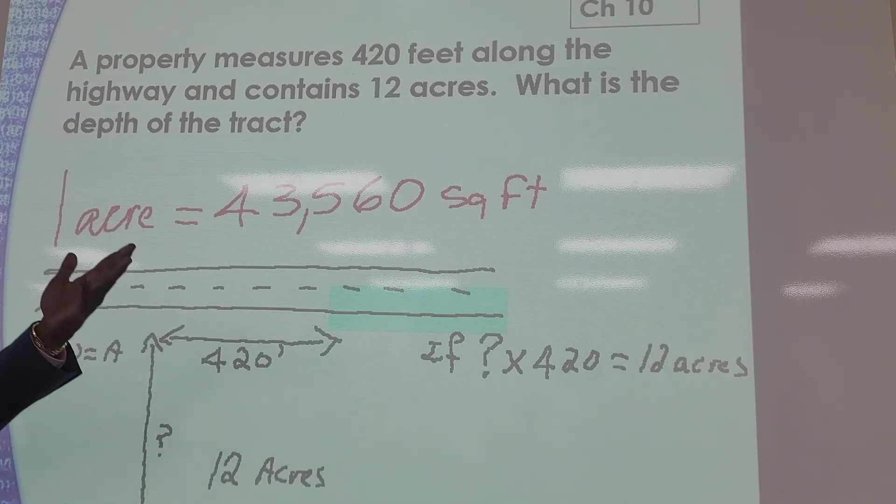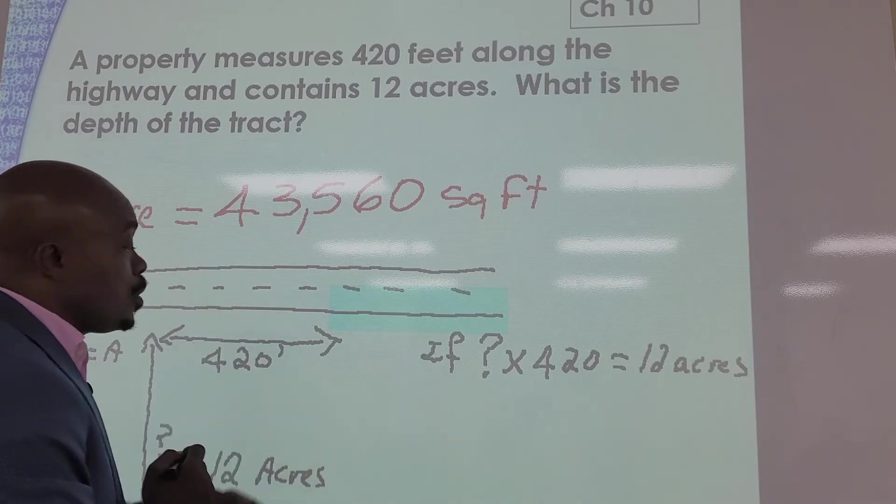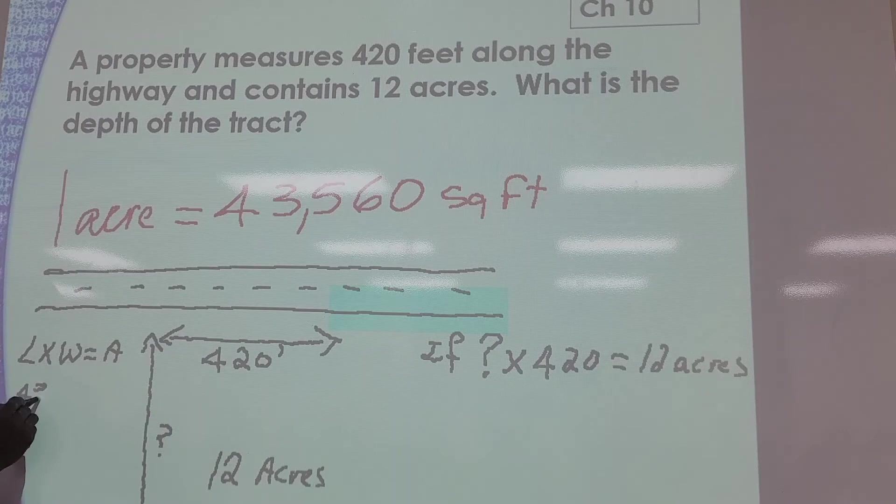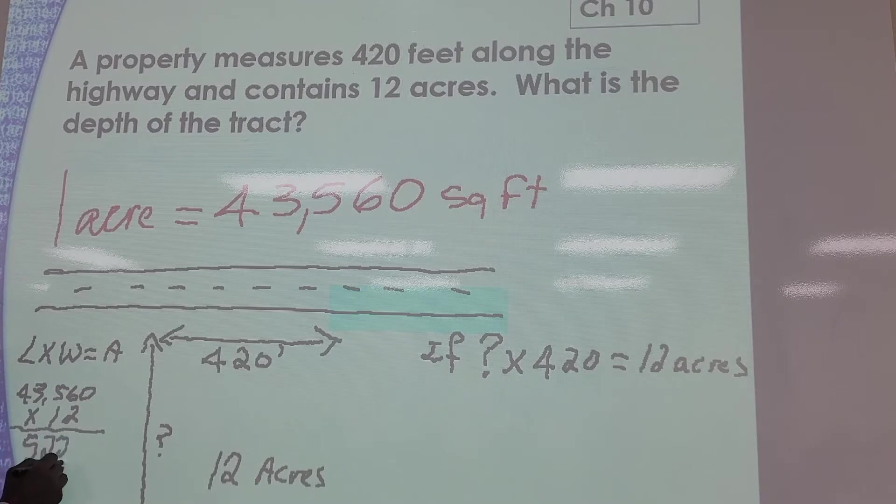Let's figure out how many square feet is in 12 acres. So 12 acres, let's take 43,560, multiply that by 12. That should give me 522,720.